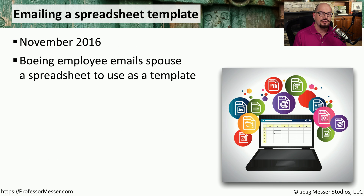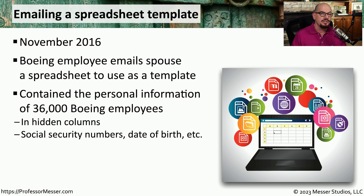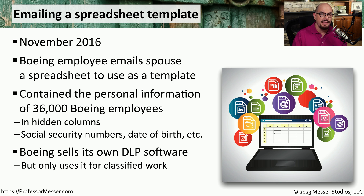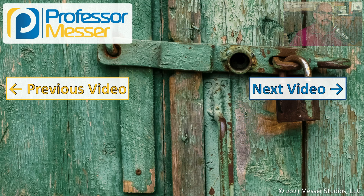This email-based DLP solution would have come in handy in November of 2016 when a Boeing employee sent their spouse an email containing a spreadsheet. When they looked at the spreadsheet, it appeared to be blank. But in reality, there were hidden fields in the spreadsheet that contained personal information for 36,000 Boeing employees — including their social security numbers, date of birth, and other sensitive information. An email-based DLP solution would have blocked that email. Ironically, Boeing sells its own version of DLP software that was not used in this instance. Normally, that DLP is used on customer networks that have classified information.